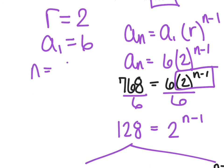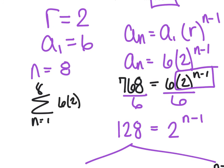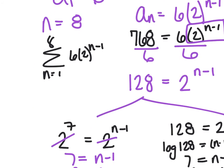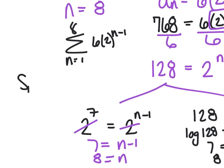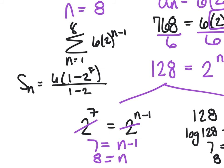I know I have n equals 8 terms. Using sigma notation: sum from n equals 1 to 8 of 6 times 2 to the n minus 1. Using the sum formula: s sub 8 equals 6 times (1 minus 2 to the 8th) all over (1 minus 2). Either way, type it in your calculator and get the same answer.